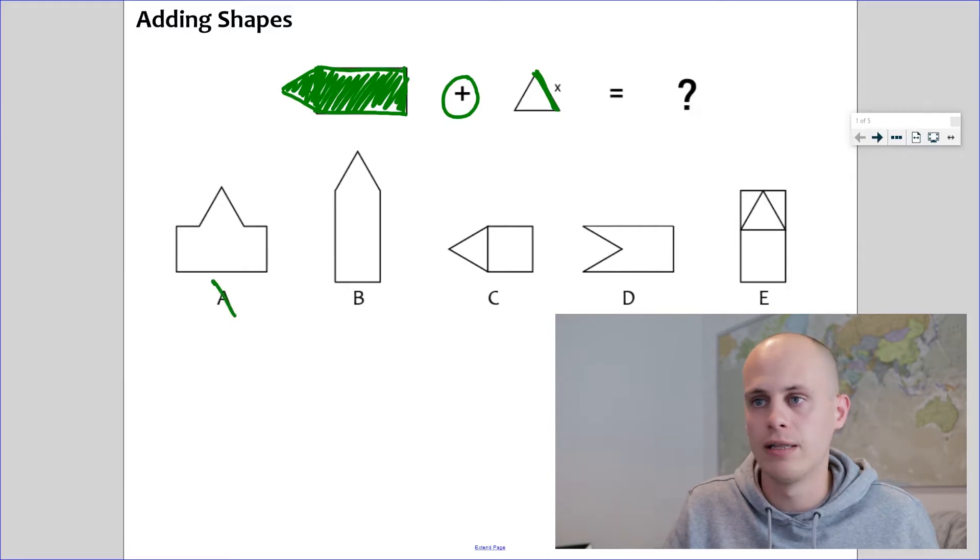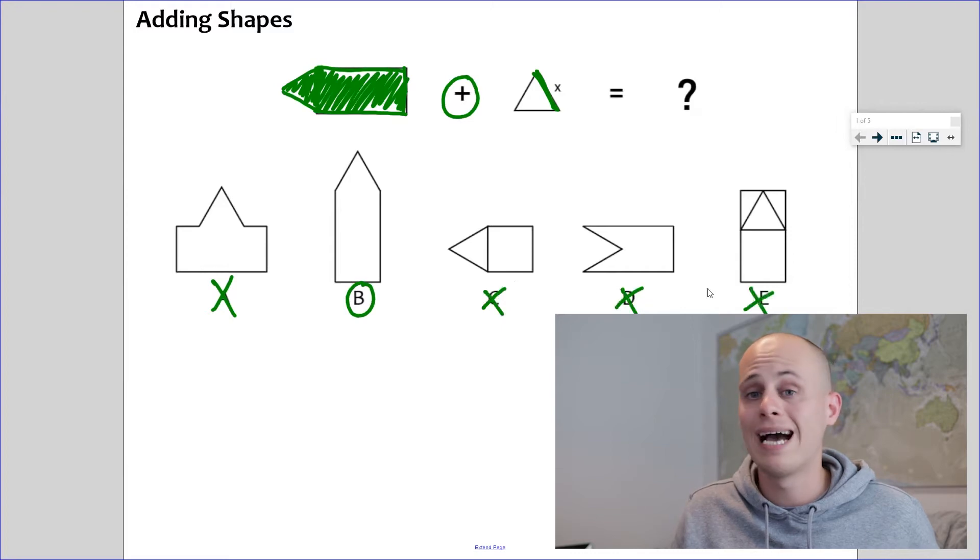Now looking through the answers, I can tell it's not A, it doesn't look anything like it. B looks like the most likely answer. I will very quickly scan the other answers to make sure I'm not falling into a trap, and I can quickly see that C, D and E look nothing like the shape we've created. So that's our first rule, adding shapes.